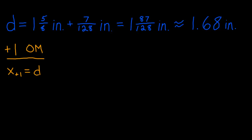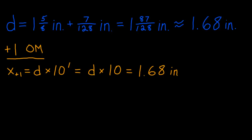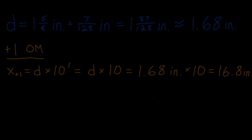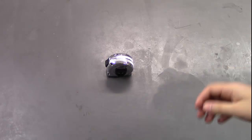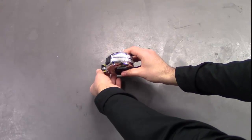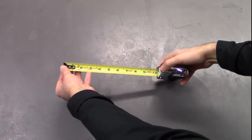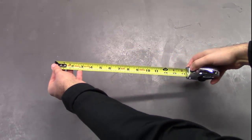To calculate the size one order of magnitude larger than the golf ball's diameter, we multiply the diameter by 10 to the first power, which is just 10, which equals 1.68 inches times 10, or 16.8 inches. To show how long 16.8 inches are, you can extend the tape measure like we show here.